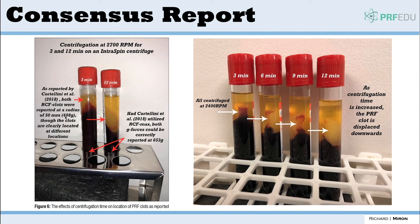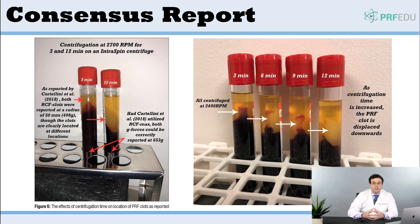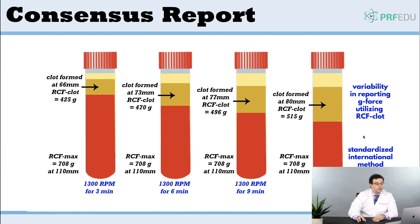The problem is that if you spin at 2700 rpm for three minutes versus 12 minutes, the clot is going to be located at a different position in the tube. The RCF value at the clot will have a very different radius at three minutes compared to twelve minutes, whereas if reported at the RCF max it would be identical. Over time — three, six, nine, twelve minutes — you continuously produce a bigger and bigger clot, so the RCF value at the clot keeps changing even though the RPM is exactly the same.